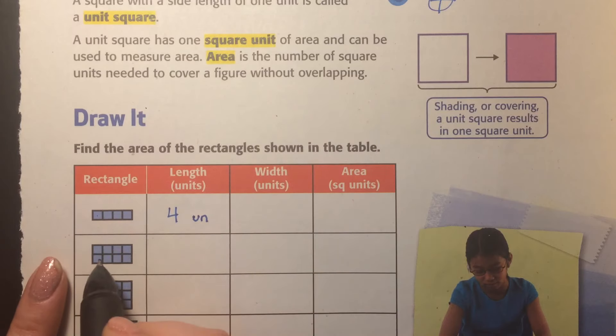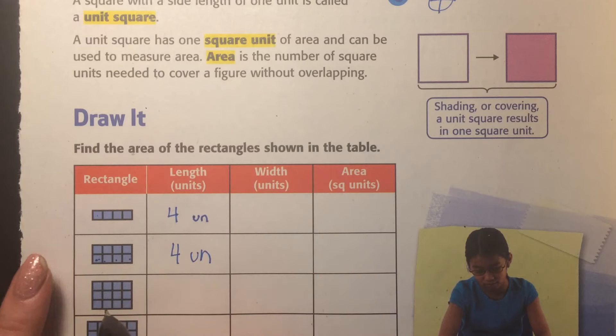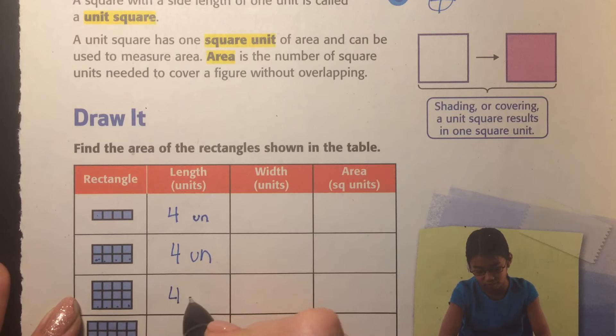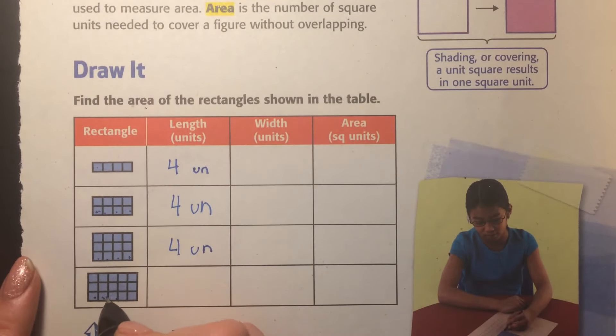This is a rectangle, the length, one, two, three, four. So again, four units. One, two, three, four. Four units. I have one, two, three, four, five. One, two, three, four, five. Okay, so this one's five units long.